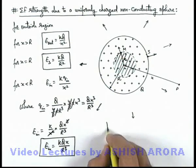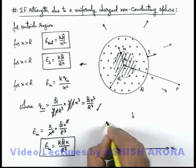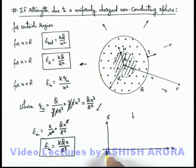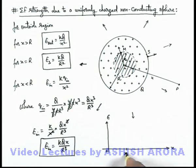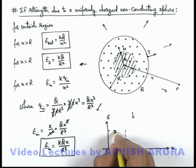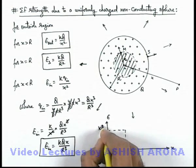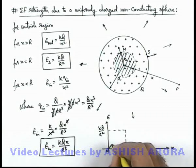If we plot the variation curve for this electric field with distance from the center, we can see from the center where x equals zero to x equals R (the surface), where electric field approaches kQ/R², the electric field is linearly rising as it is proportional to x.